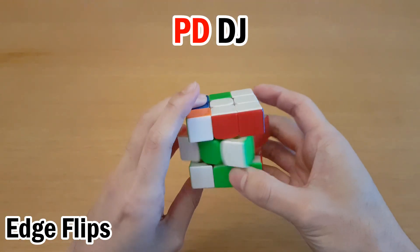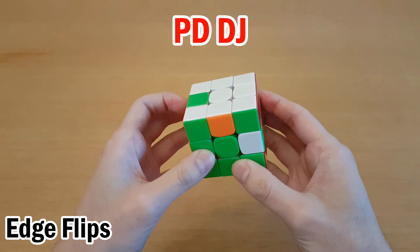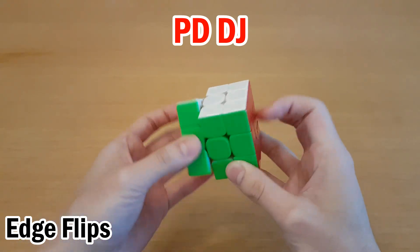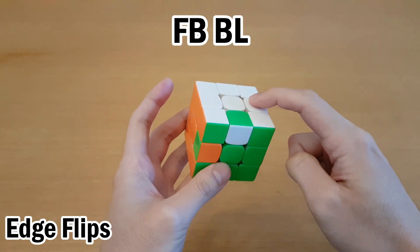So PD would look like this, and then DJ would look like this. And if the flip was on the left side, you would use this as the helper instead.